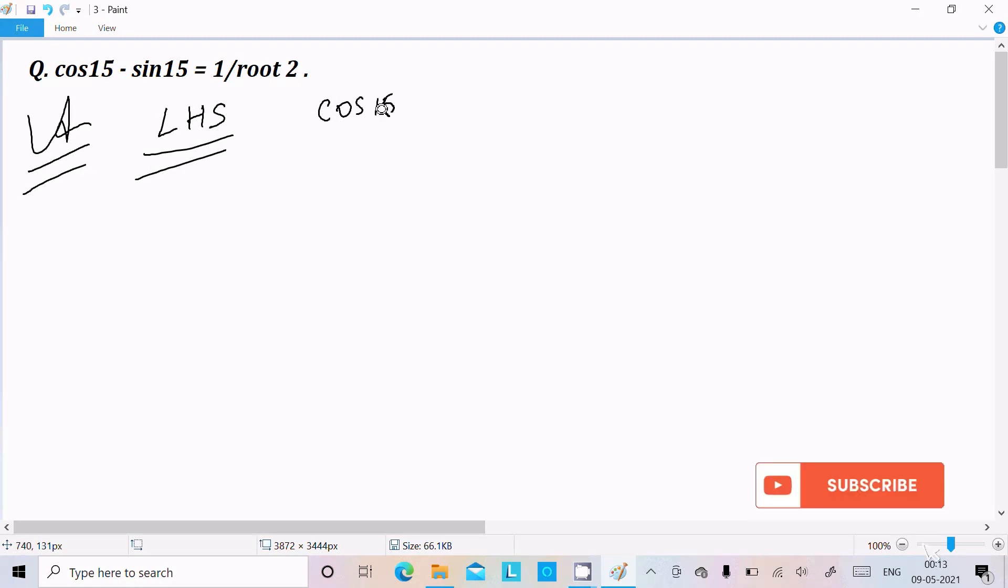Cos 15° - sin 15°. I'm going to convert this into sin form, so here we can write cos(90° - 75°). If you subtract, 90 - 75 = 15.